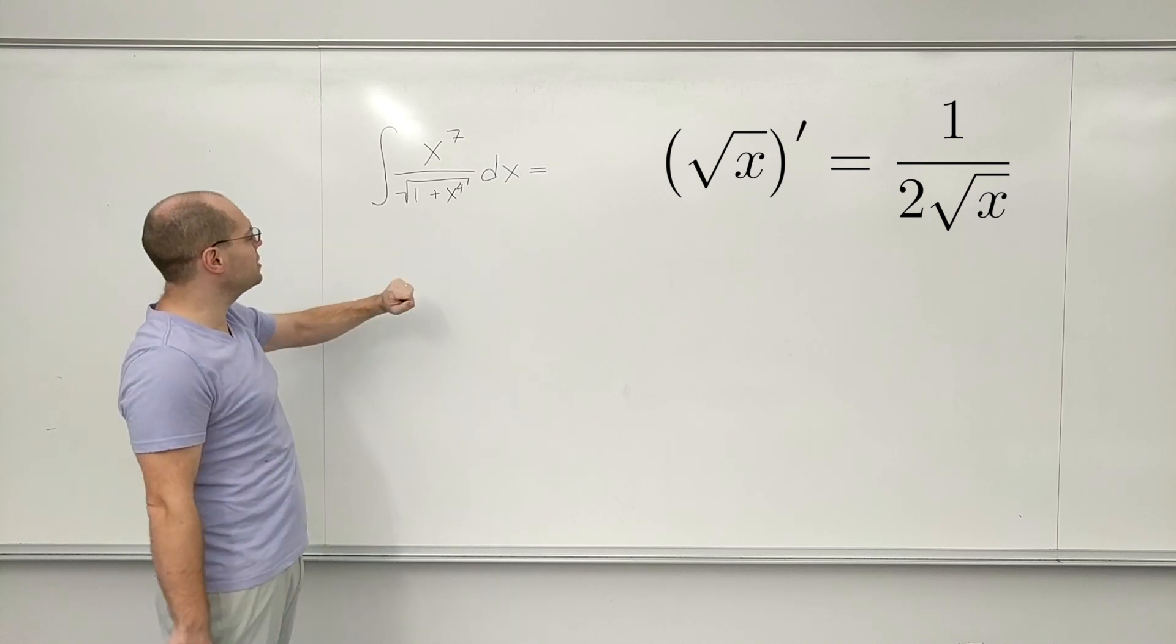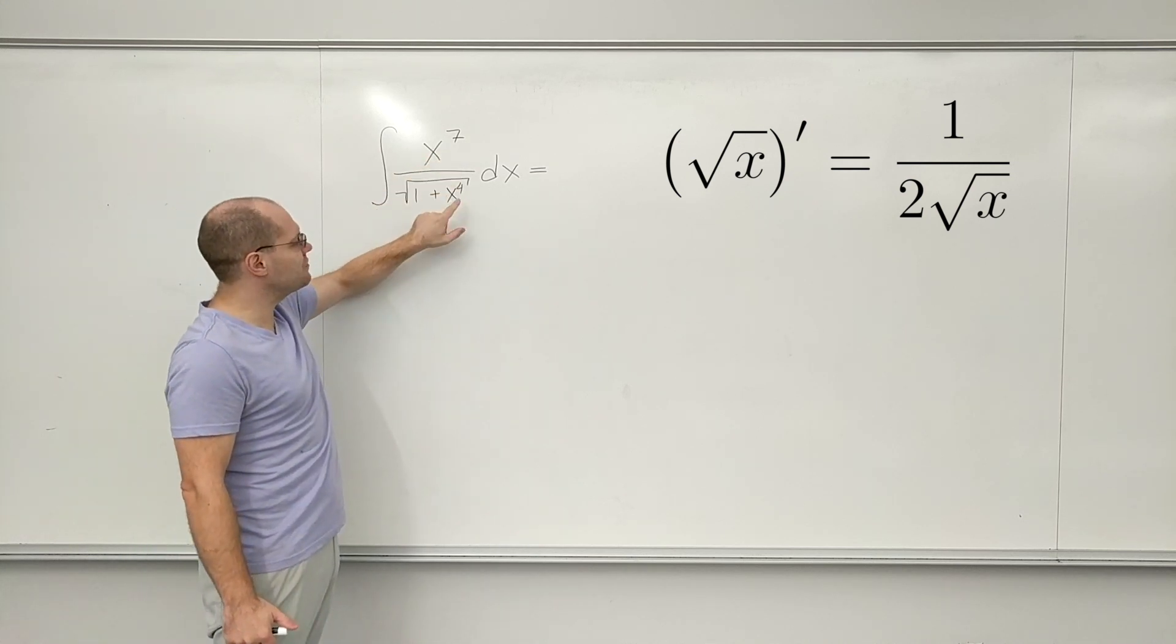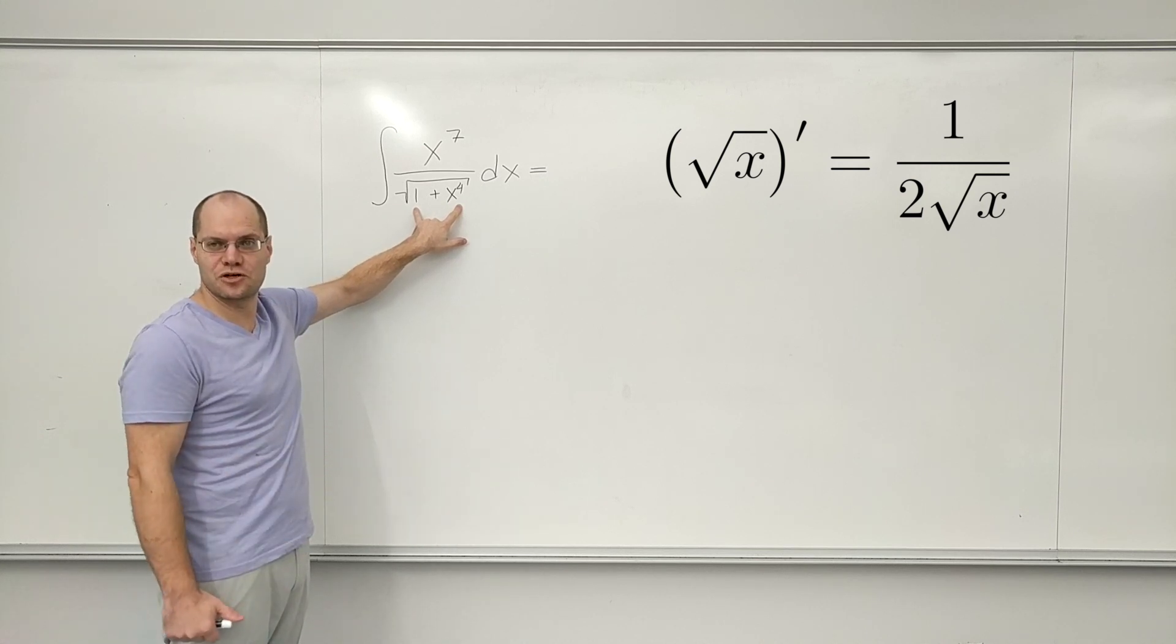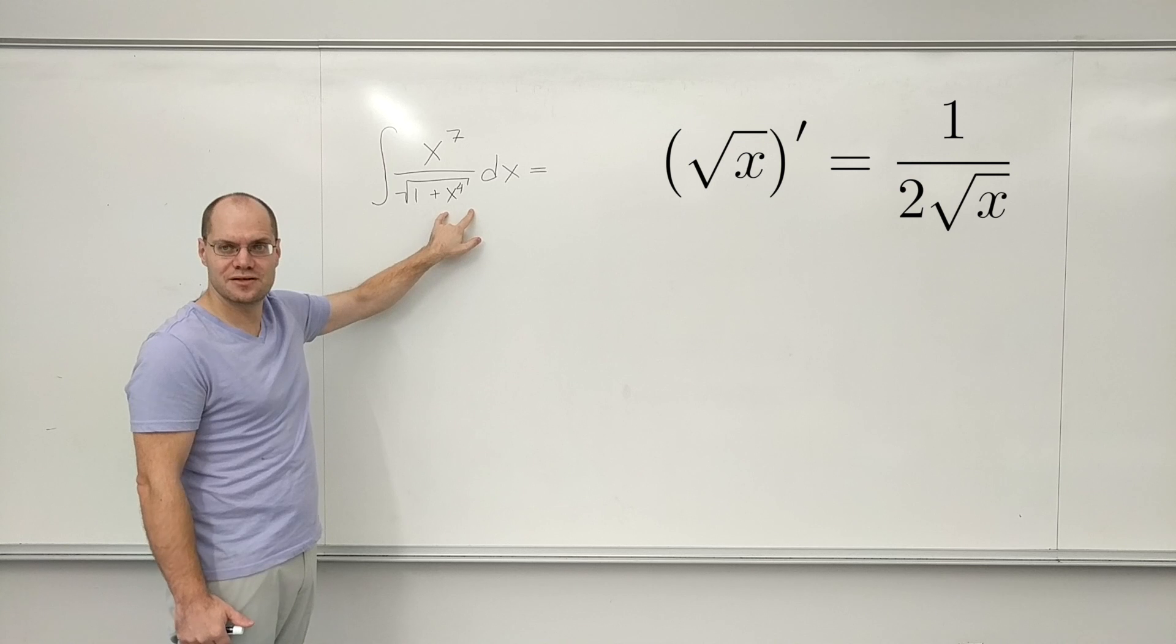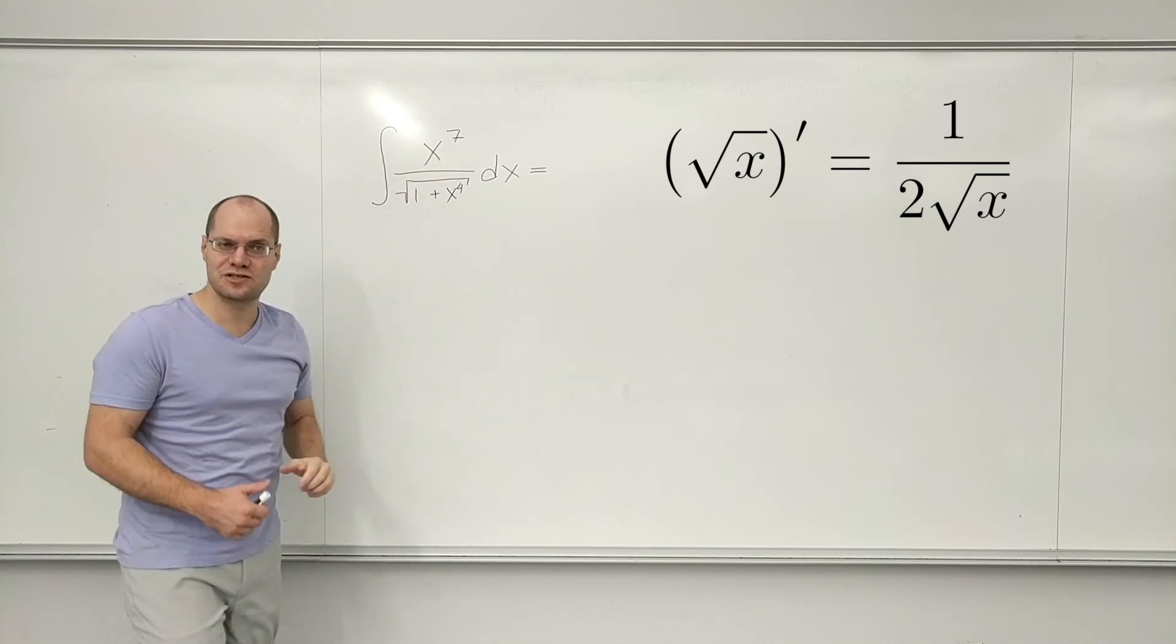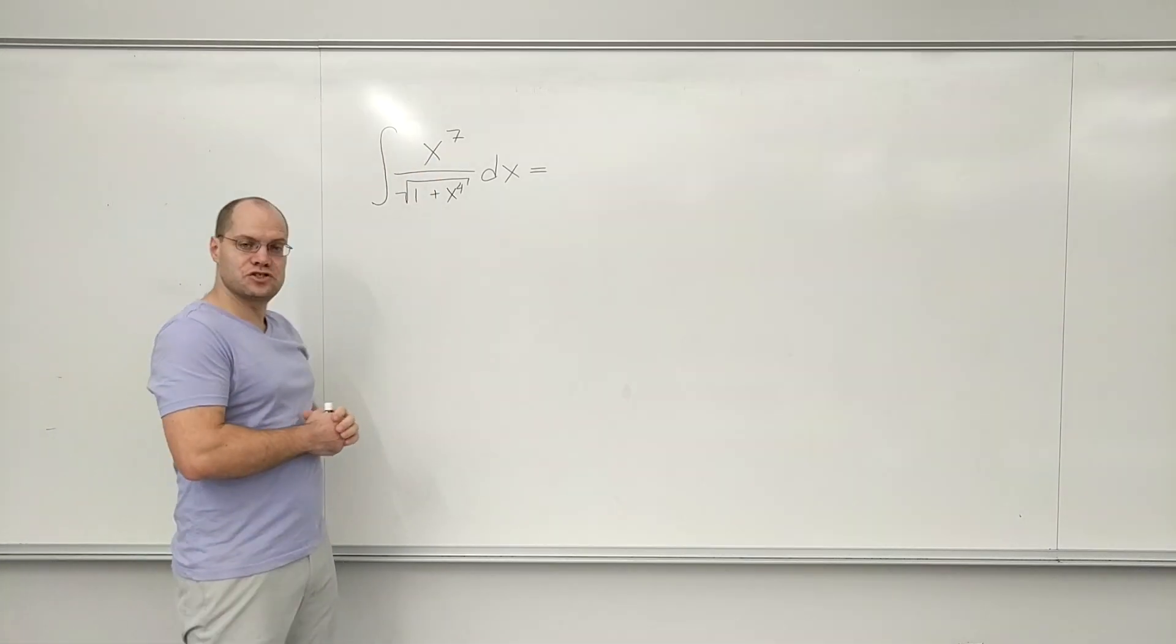And then that doesn't quite work out, because then I would need to have the derivative of what's inside the square root as a multiplicative factor, which would be x cubed, and I don't have it. I have x to the 7th. Okay, so that doesn't work.